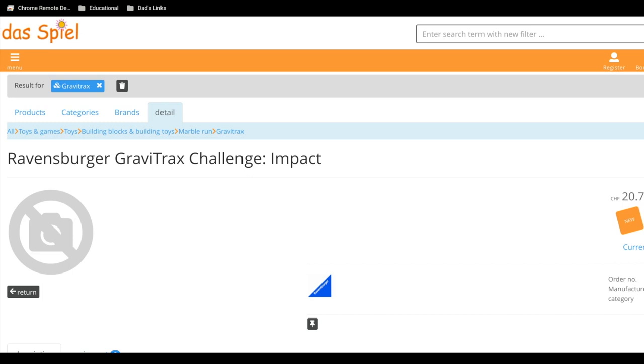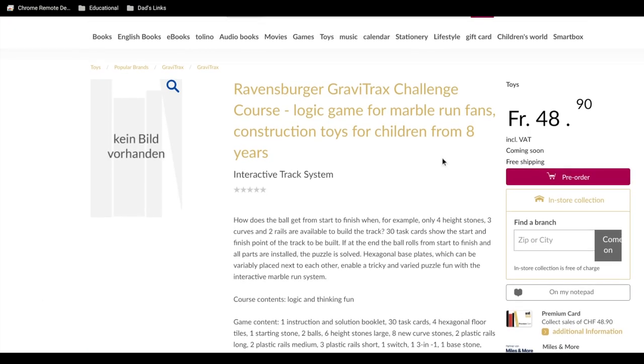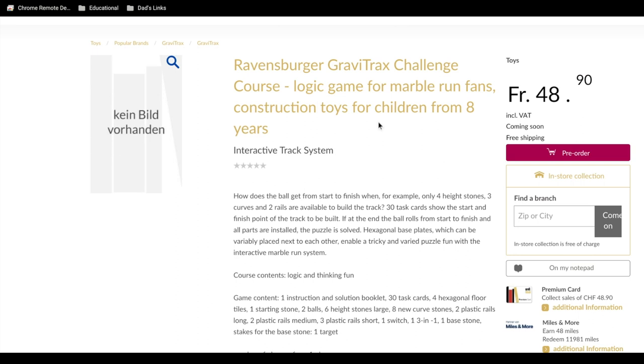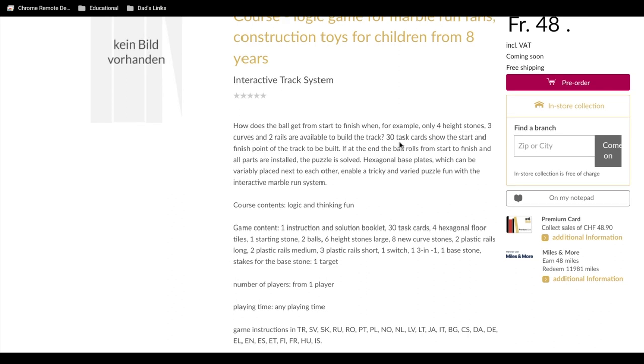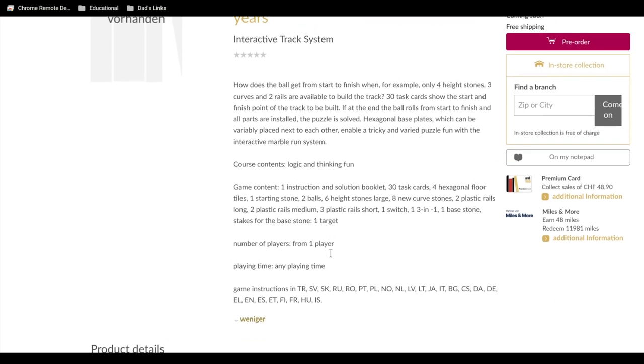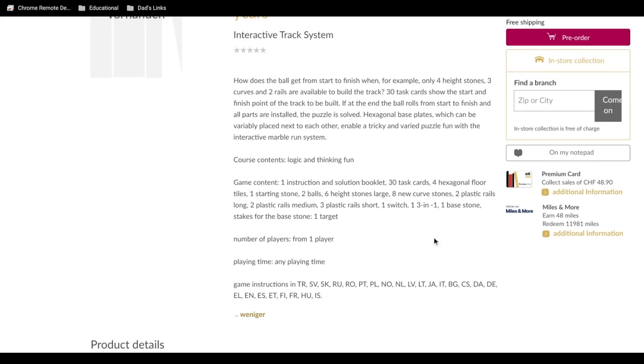This is not the only challenge kit, not only the flow and the impact, but well, maybe this is the impact one. So this one doesn't have, it just says course gravitas challenge course. And it's, yeah, it also has 30 task cards, but it's slightly different contents here. We've got the 30 task cards, four hexagonal floor tiles, one starting stone, two balls, six height stones large, eight new curve stones, two plastic rails long, two plastic rails medium, three plastic rails short, one switch, one three in one, one base stone stakes for the base stone, and one target stakes for the base stone. Interesting.